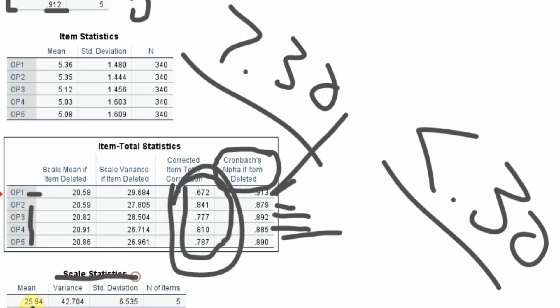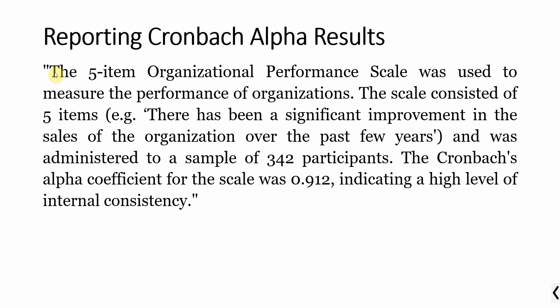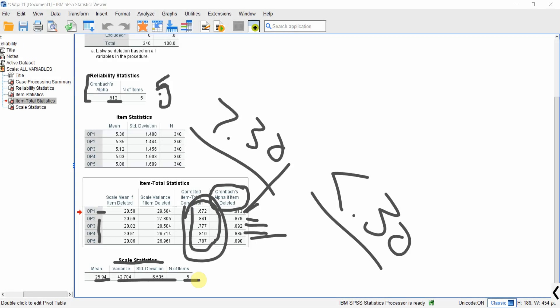Finally, you can have the scale statistics for the complete scale — the mean value, the variance, the standard deviation, and the number of items. How do you report Cronbach's Alpha results? Just make sure that if you have got multiple latent variables in your study, you do Cronbach's Alpha calculation for each latent variable separately. For example: 'The five-item organizational performance scale was used to measure the performance of the organizations. The Cronbach's Alpha was 0.912, indicating a high level of internal consistency.' This is how you can perform reliability analysis in SPSS. Thank you very much.